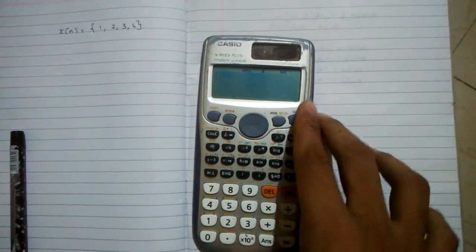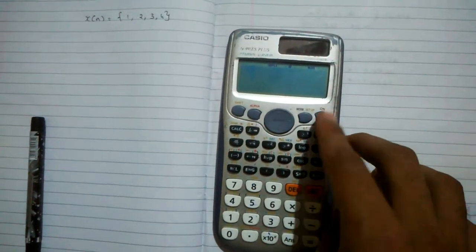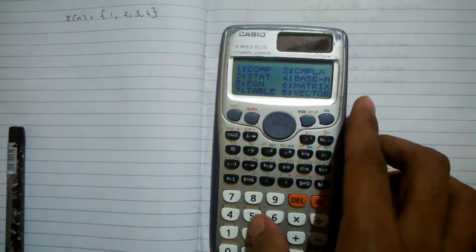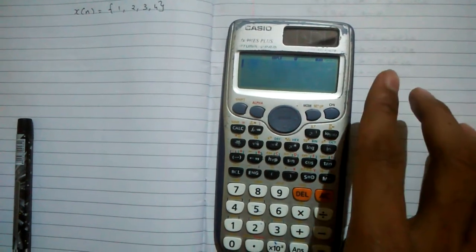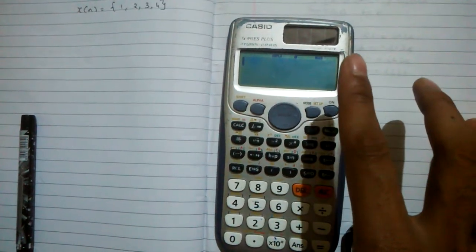First, make sure the calculator is in complex mode. If not, hit mod and then 2. Now the calculator is in complex mode. Then follow the exact same way as shown in this video.